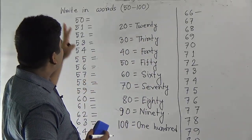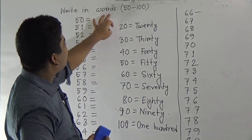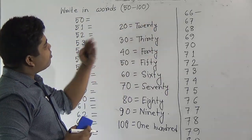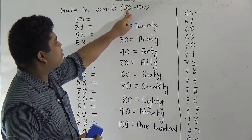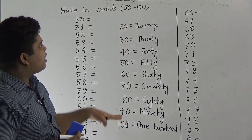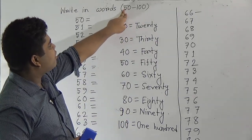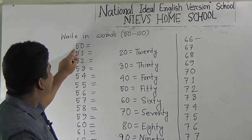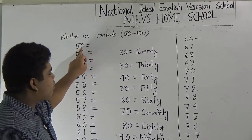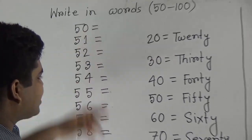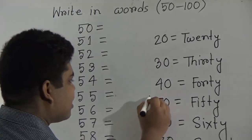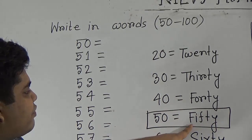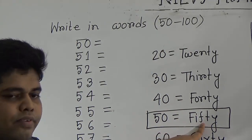We have already learnt from 1 to 50 in our half-yearly exam. Now we shall learn from 50 to 100. So let us start. Our first spelling is 50, which is in this portion. This is 50 and the spelling of 50 is F-I-F-T-Y.